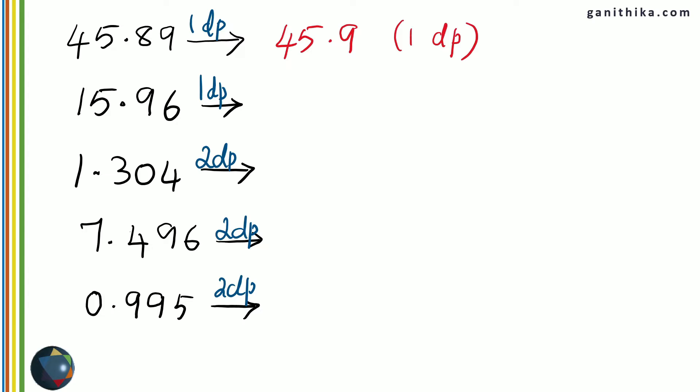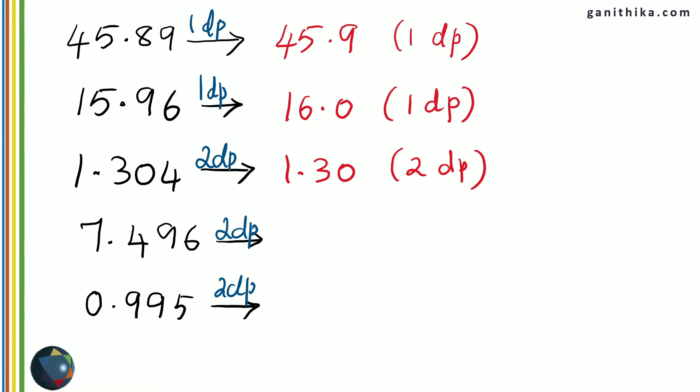The next answer: 15.96 to one decimal place. The second decimal place has a number more than 5, which is 6. Therefore 9 will be rounded off to 10, and that 10 will be added to 15 to make it 16.0. You have to give the number as 16.0 to show that you have rounded off the first decimal place from 9 to 0. Next: 1.304 to 2 decimal places — the third decimal place has 4, so there is no change in the second decimal place which is 0. The answer is 1.30, and it is important that you write the 0 to show you have rounded off from the third decimal place.